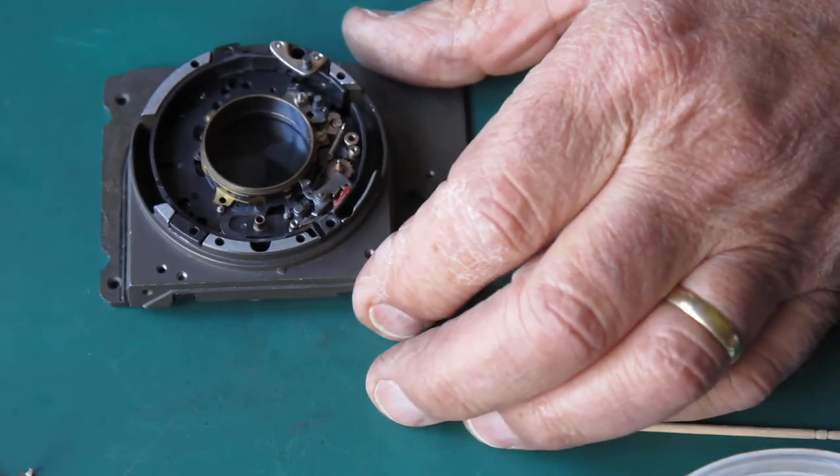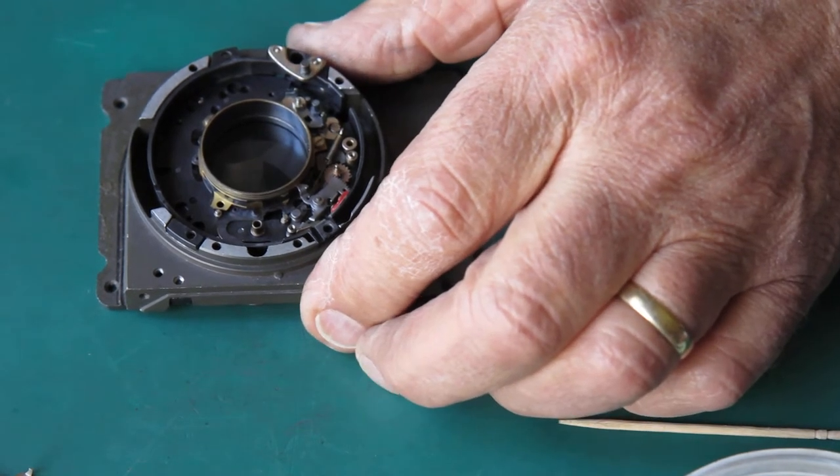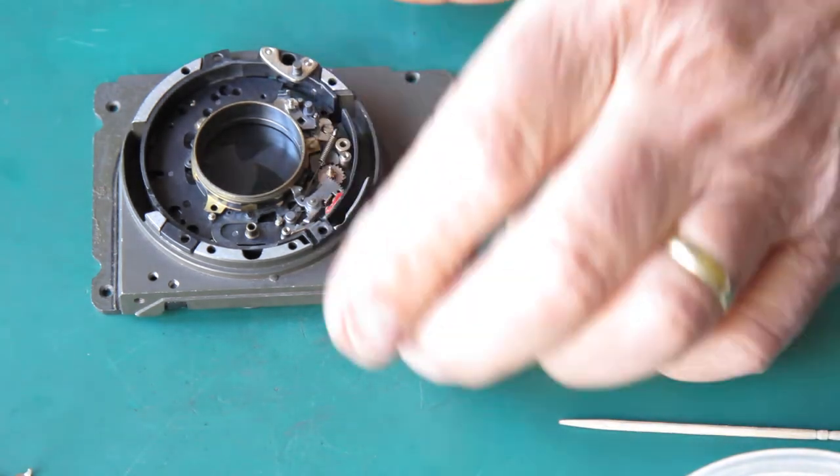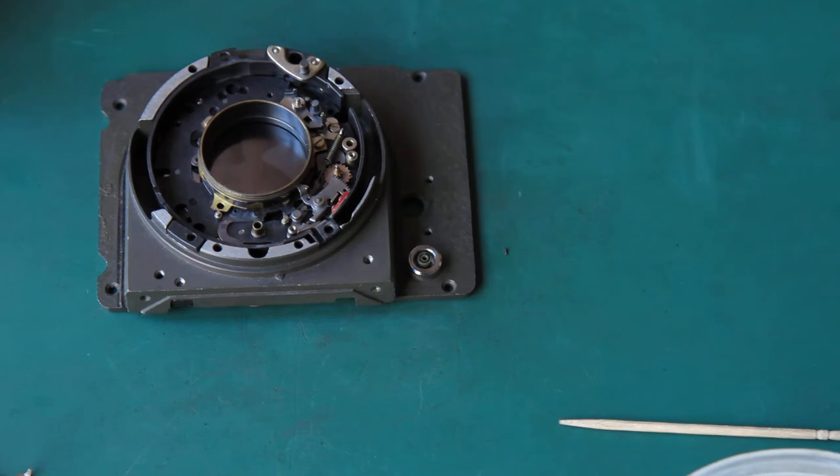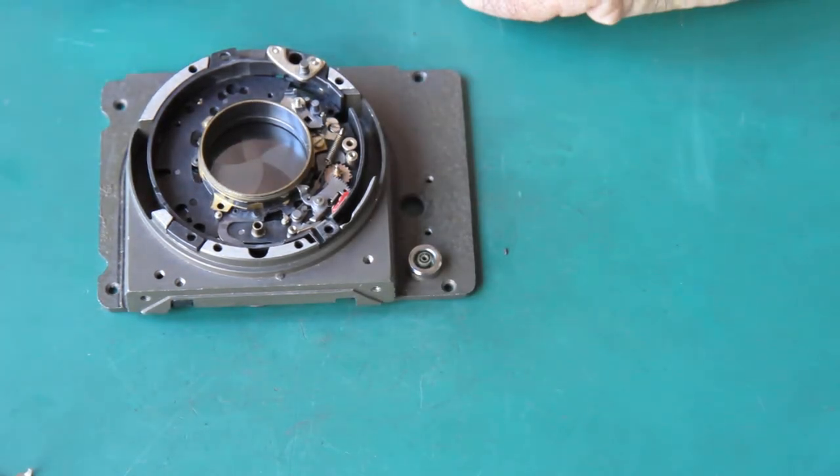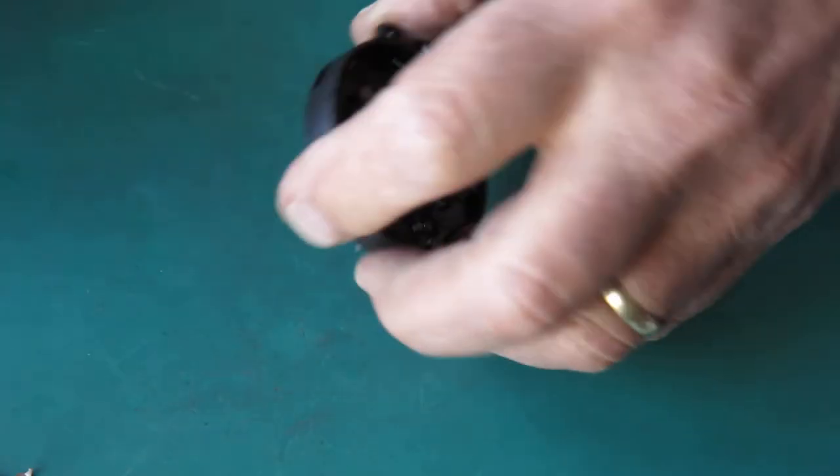When it's set to the M setting, the flash is fired before the shutter starts to open, and that's to allow the flash bulbs to reach peak brilliance before the shutter opens to its, gets to full aperture, or as large as the aperture you've set. Okay, so far so good.